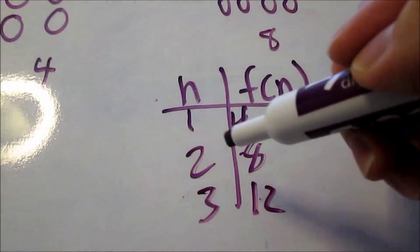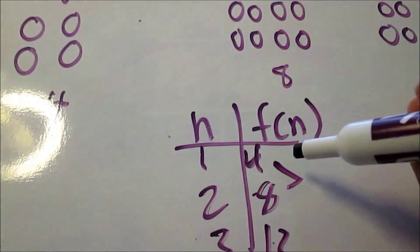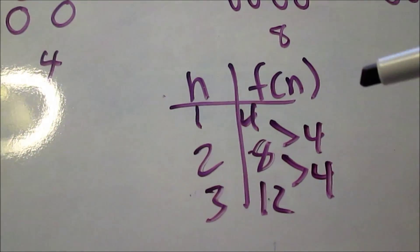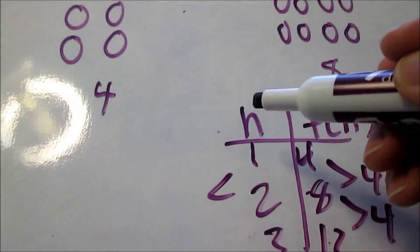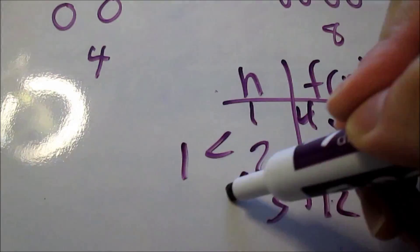And to create the rule, I look at the change in the number of circles. Four to eight, that's plus four. Eight to twelve, that's also plus four. On the left side, I look at the change from stage number. One to two, that's plus one. Two to three, that's plus one.